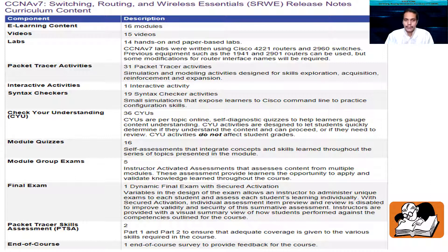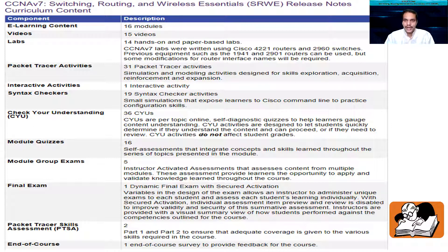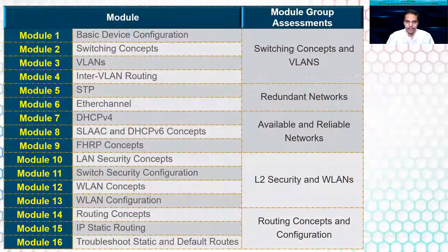There are five module group exams, one final exam, and unlike ITN there are two PTSA exams here — two Packet Tracer Skills Assessment exams. There is also one end-of-course survey to complete the course and get the certificate. Each and every module has its own quizzes, and I suggest every student go through those quizzes before taking the module group exams.